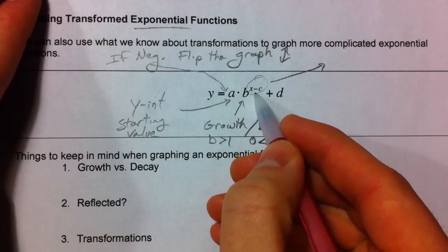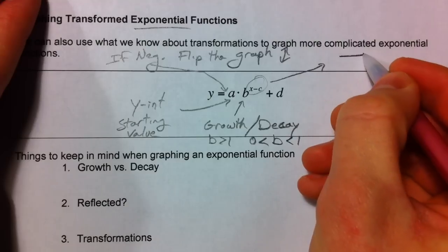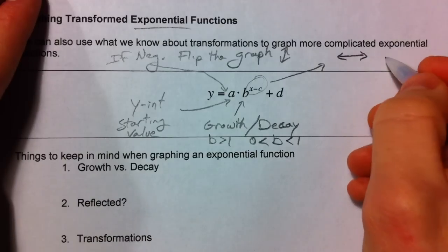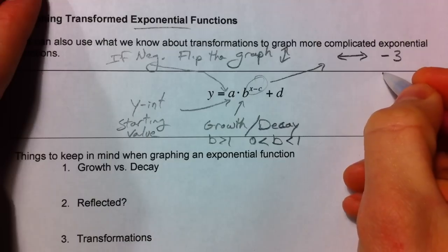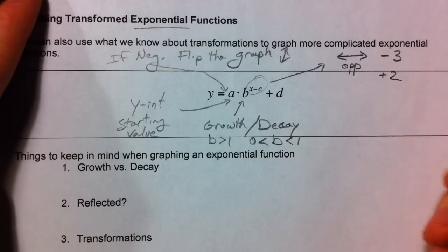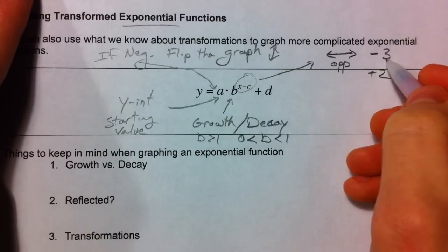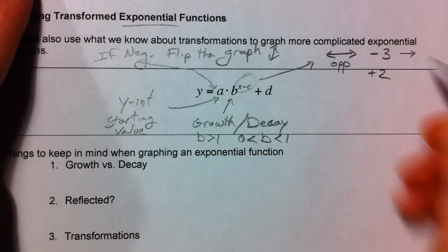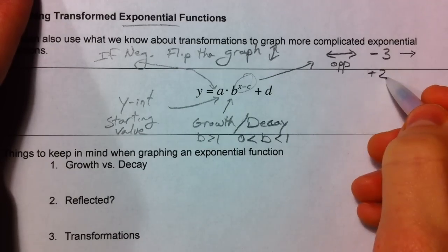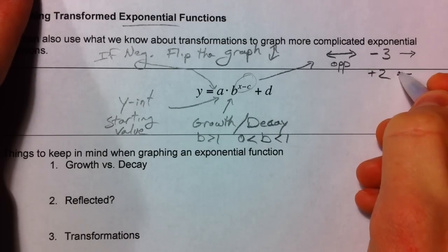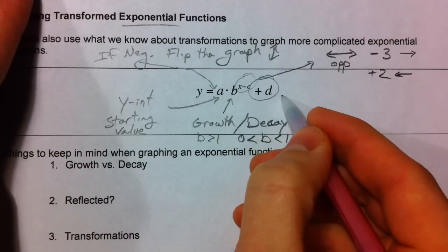Now for the new material: the 'x minus c' term. Because it's with the x, it affects the graph horizontally — left and right. It affects the graph opposite of what our brain thinks. So 'minus three' might seem like it moves left, but it actually shifts the graph to the right three. 'Plus two' seems like right, but it actually shifts it to the left.